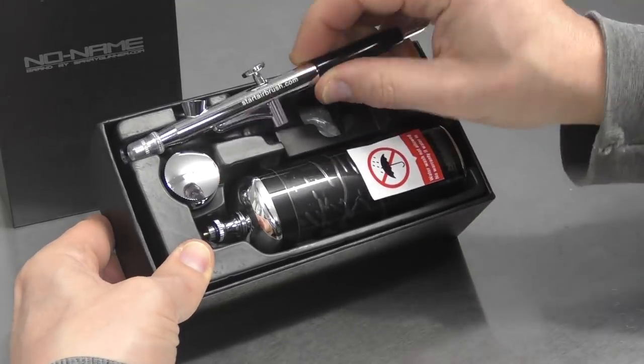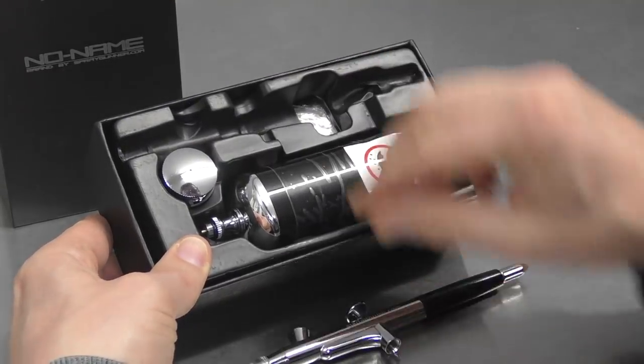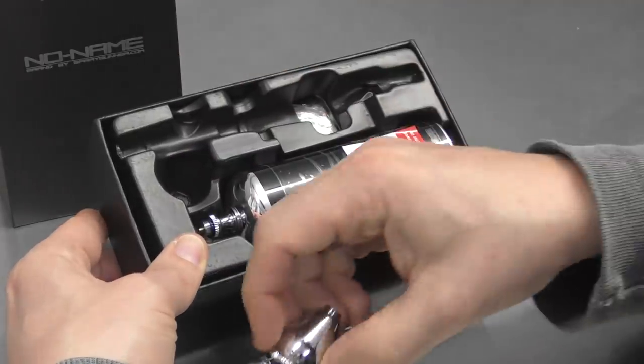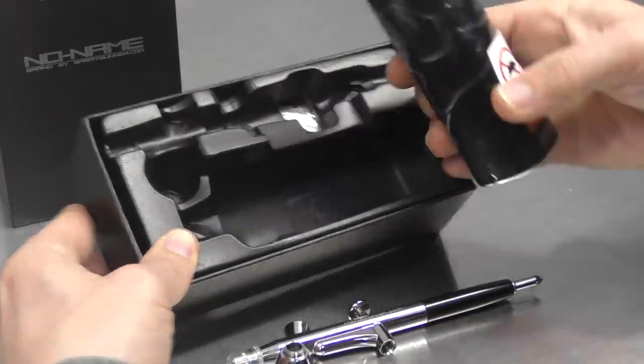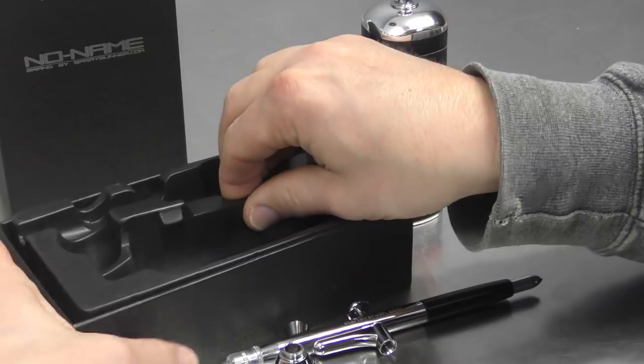Let's go ahead and pull out all the components. So we've got our airbrush, color cup, the battery and then under here we're going to have another color cup which is kind of cool.